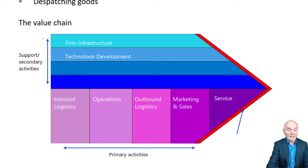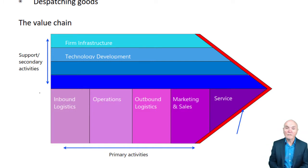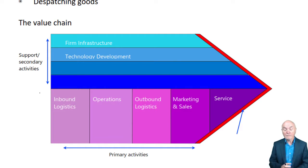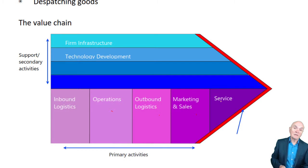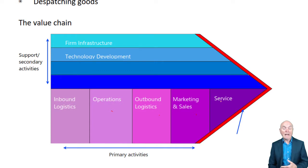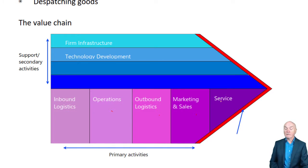Then you have support or secondary activities across the top. We have firm infrastructure — think of that as the head office, maybe the accounting department — and this serves all of the primary activities. Technology development is basically research and development. You can improve how you carry on these activities, and maybe improve the products themselves through technology development.